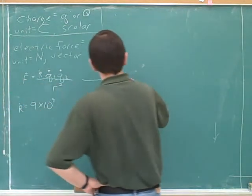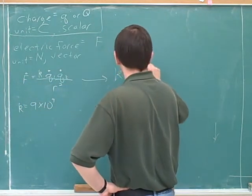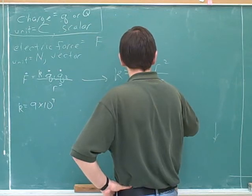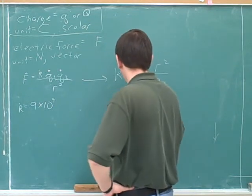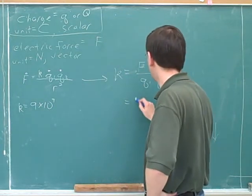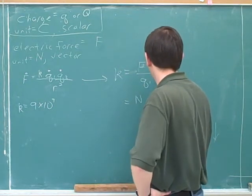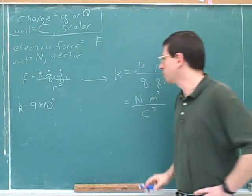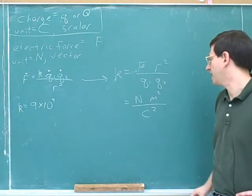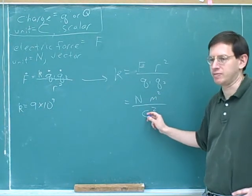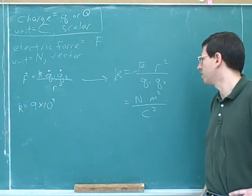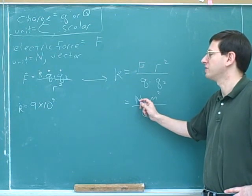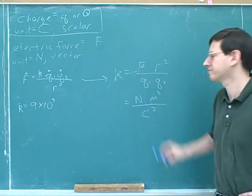Start by solving Coulomb's law for k. The units for force are Newtons, for R that's meters squared in the denominator, and coulombs times coulombs. So k can be expressed as Newtons times meters squared per coulombs squared. You can break it down further since a Newton is really a kilogram meter per second squared, but Newtons times meters squared per coulombs squared is good enough.